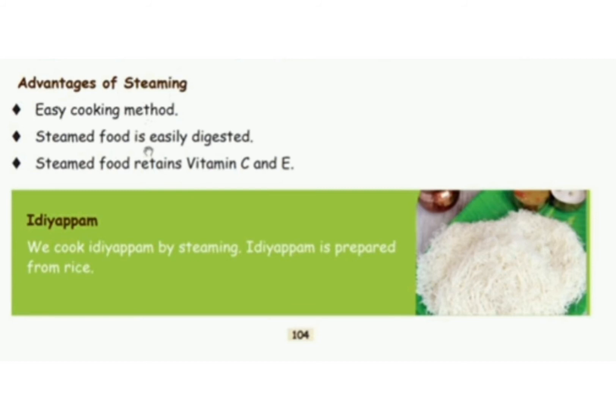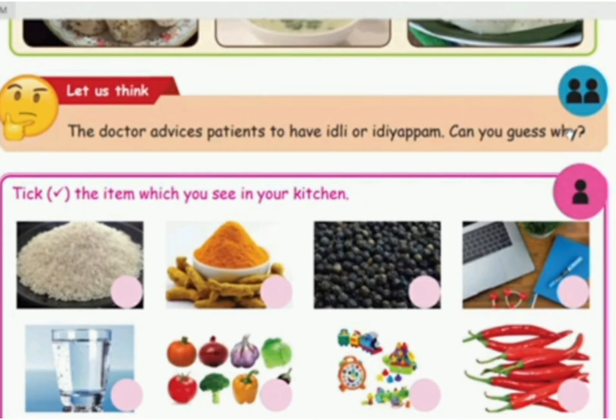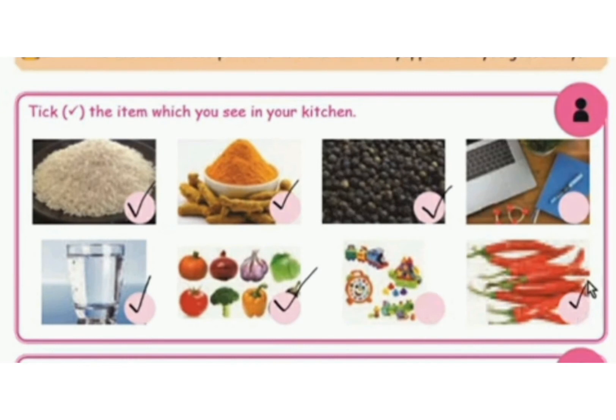Look at your book, children. Here some activities are given. Take the items which you see in your kitchen. The first one is rice — it is in your kitchen. The next one is turmeric powder, pepper, water, and vegetables such as onions — all in the kitchen. A keyboard or laptop is not in the kitchen. A clock and toys are also not in the kitchen. Chilis are also in the kitchen. So you have to tick the correct items.